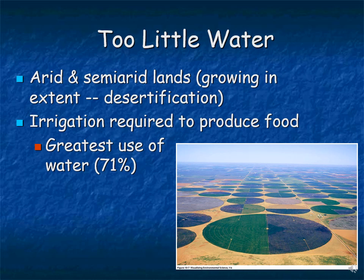One of the things people have tried to do to increase food production in arid and semi-arid lands is to irrigate — pumping water from a different location to turn areas into productive agricultural areas. Irrigation is the greatest use of fresh water on our planet, using 71% of all freshwater. If you fly over the Midwestern United States, you see crop circles — made not by aliens but by irrigation systems that spin around a central axis, allowing crops to grow wherever the water reaches.